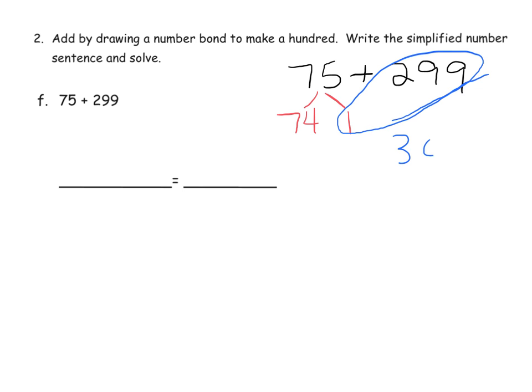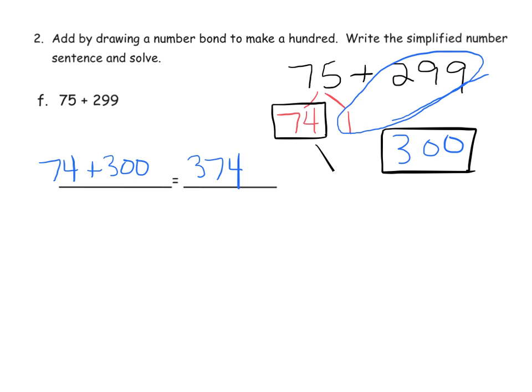And then there is our milestone number. That's 300. So our simplified number sentence becomes 74 plus 300, which is 374. And sure enough, we can see that over here. That 1 plus 299 equals 300, right here. Plus we have 74 left over. So 300 plus 74 is 374.